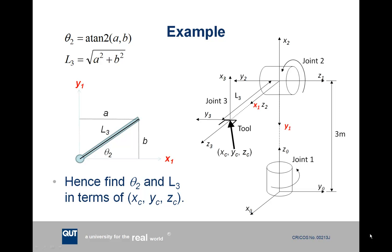So first of all, if we define what theta 2 is in terms of the A and B distances, well, that's fairly simple. Theta 2 is just atan2 of A comma B. L3 we can define because it's just the hypotenuse of a right-angled triangle, we can use Pythagoras' theorem. So L3 is the square root of A squared plus B squared. So we now have two fairly simple expressions for theta 2 and L3, but we have these in terms of these A and B parameters, and of course we need them to eventually be in terms of XC, YC, and ZC.